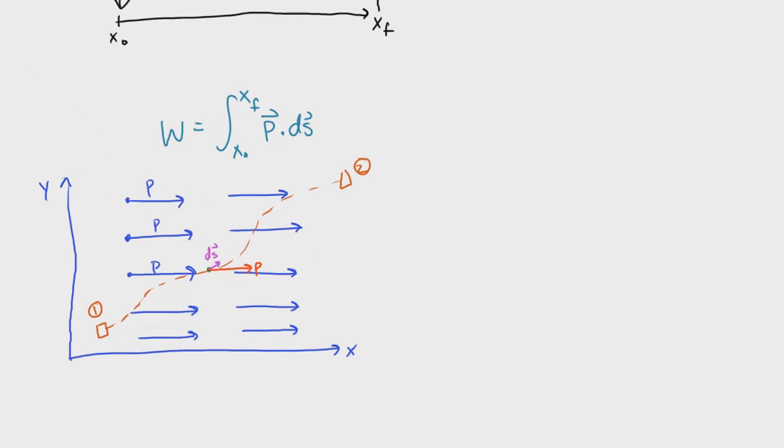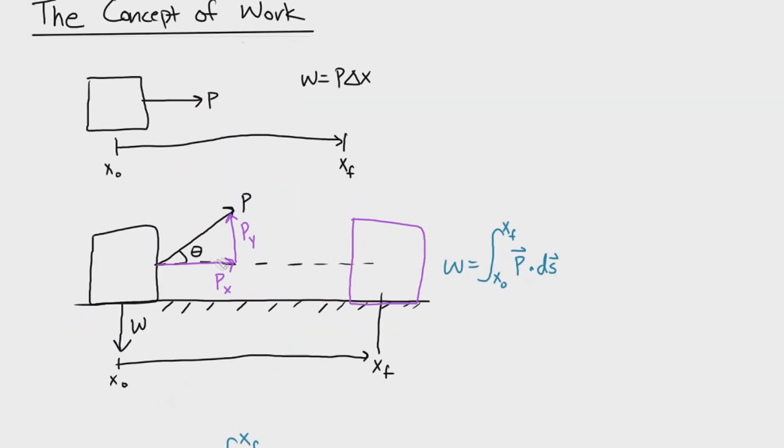To find the work of that very small increment done by P, we could say that work equals P dot ds. What that simply means is that we're finding the force vector that is being applied tangentially towards the path that is acting onto the object.